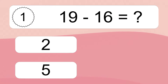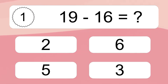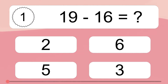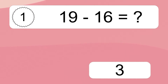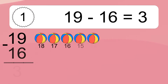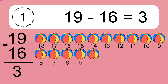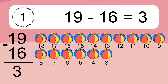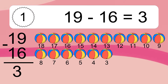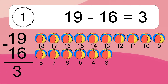19 minus 16 equals what? 19 minus 16 equals 3. Let's count it: 18, 17, 16, 15, 14, 13, 12, 11, 10, 9, 8, 7, 6, 5, 4, 3.